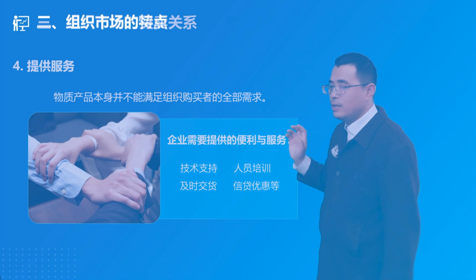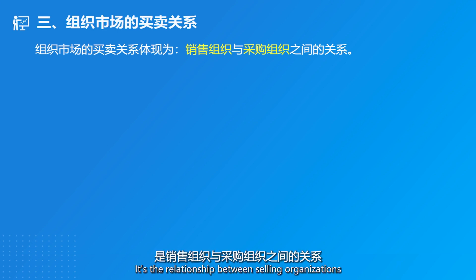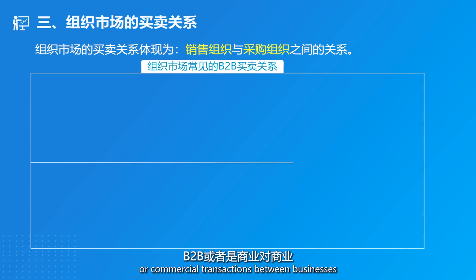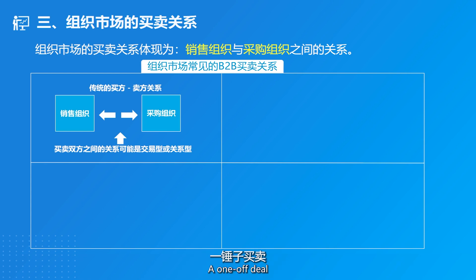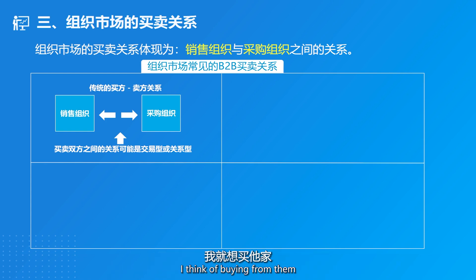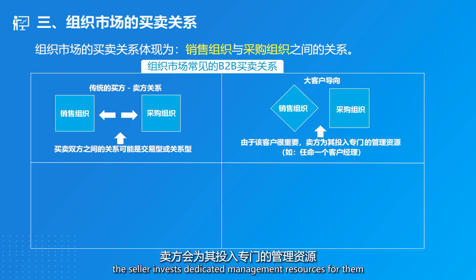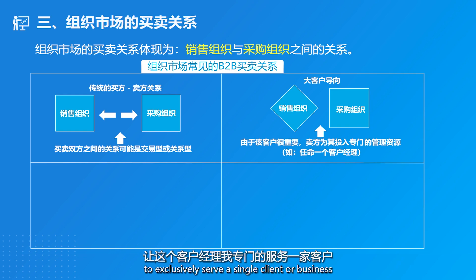Now the third point: buyer-seller relationships in the organizational market. In terms of composition, it reflects the relationship between selling organizations and purchasing organizations. Commonly, B2B — business-to-business — transactions involve traditional buying and selling relationships, which can be transactional or relational in nature. Transactional means once the transaction is complete, the interaction ends — a one-off deal. Relational involves building a good relationship between the two parties, so when buying something, you think of buying from them due to the relationship. The second type is key account orientation — due to the importance of certain clients, the seller invests dedicated management resources, such as assigning a customer manager to exclusively serve a single client.